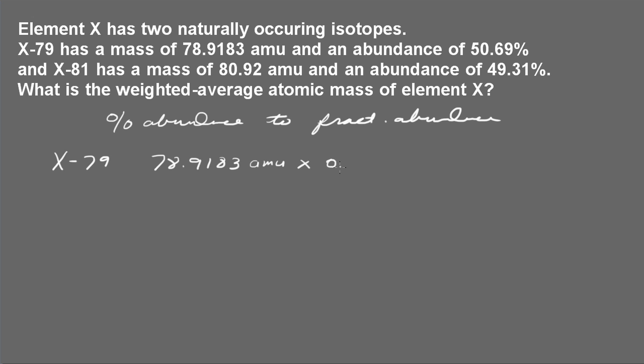And I'm going to multiply that by the fractional abundance. The percent abundance is 50.69. I divide that by 100 and my fractional abundance is 0.5069. I will then look at X-81 and the atomic mass of X-81 is 80.92 atomic mass units. And I'll go ahead and multiply that by its fractional abundance which is 0.4931.